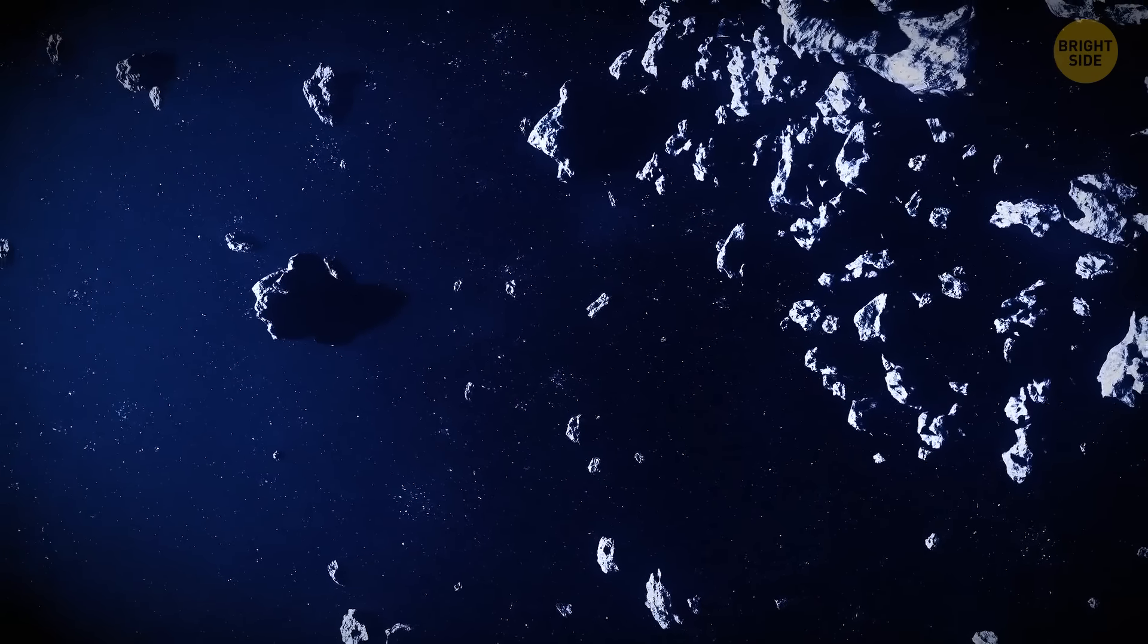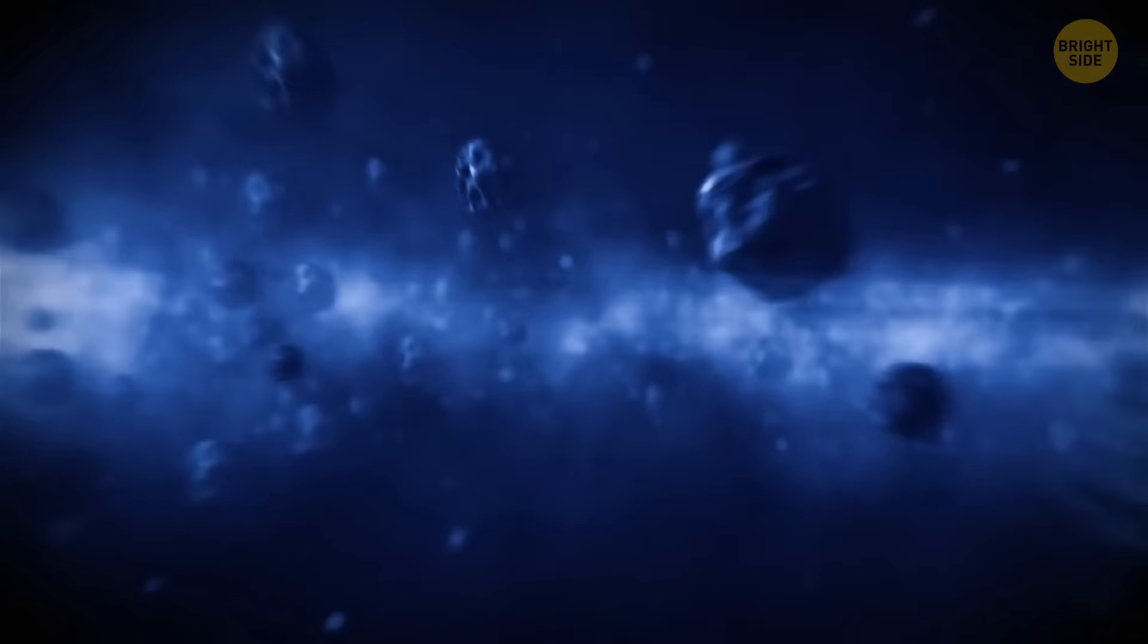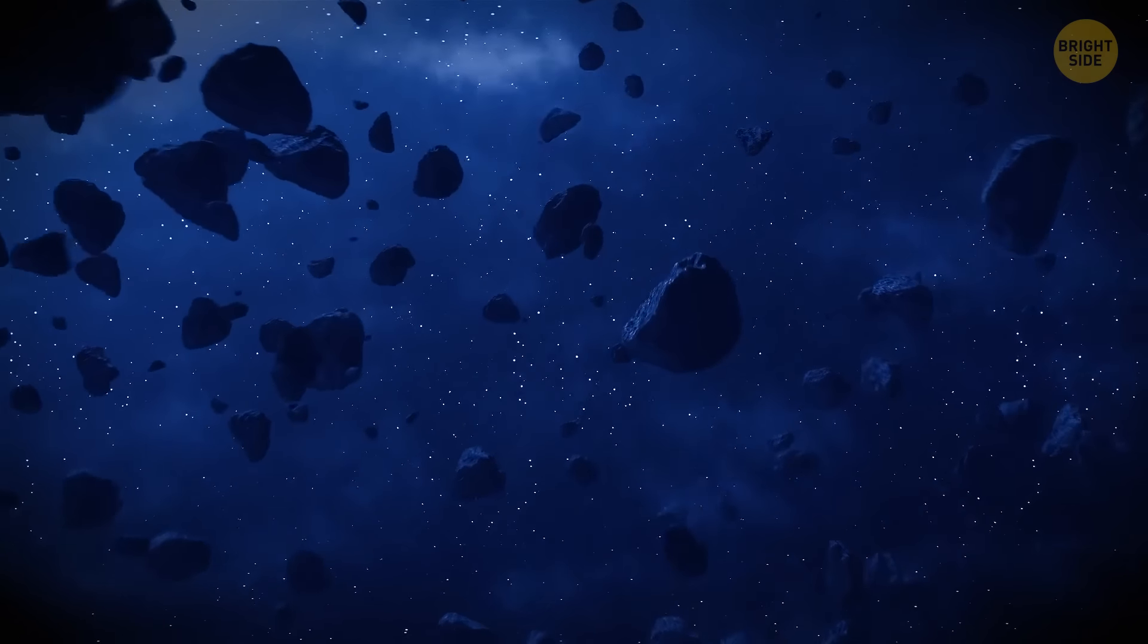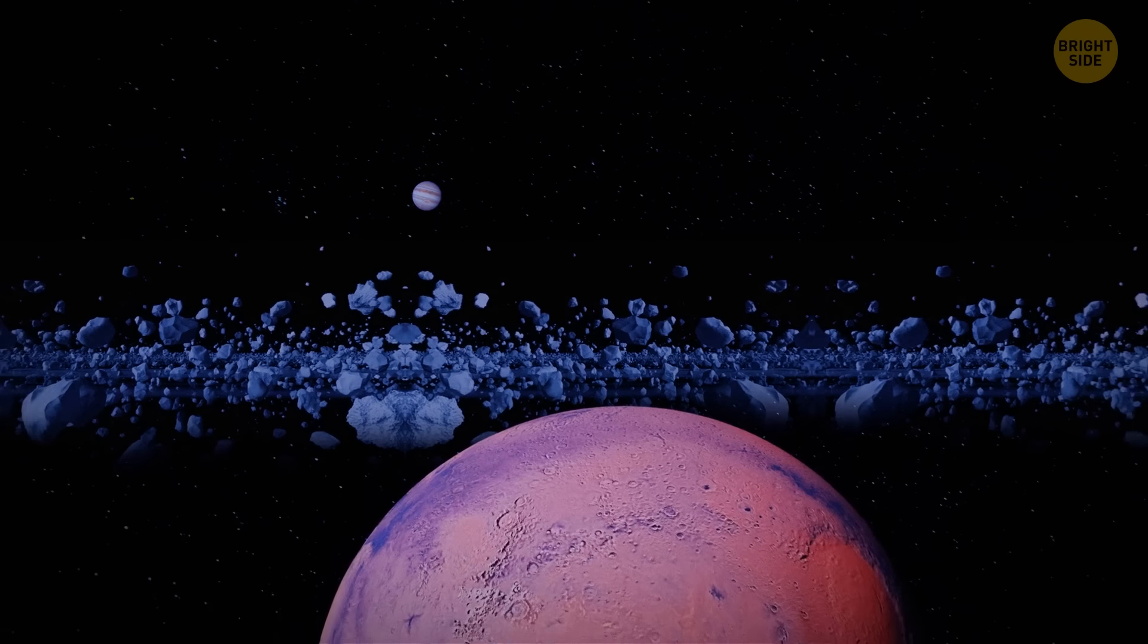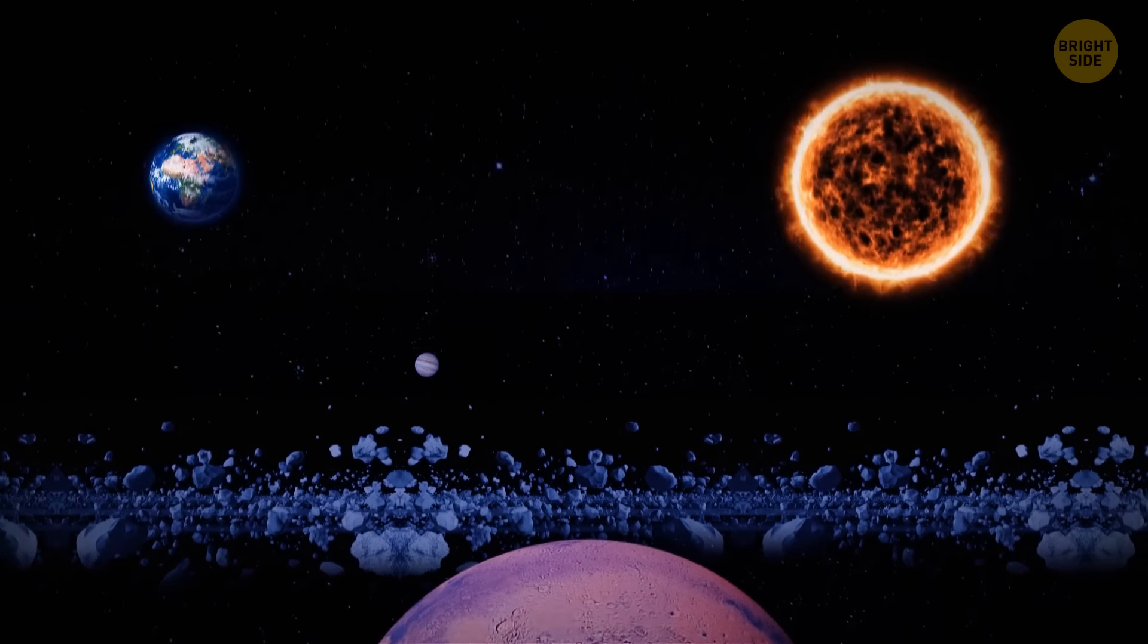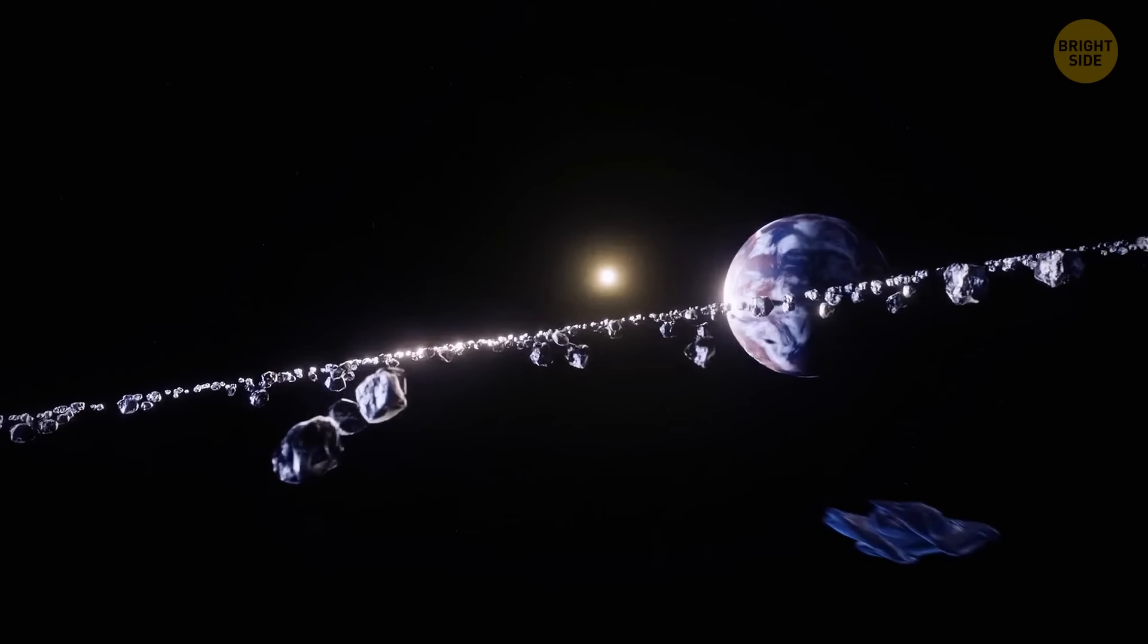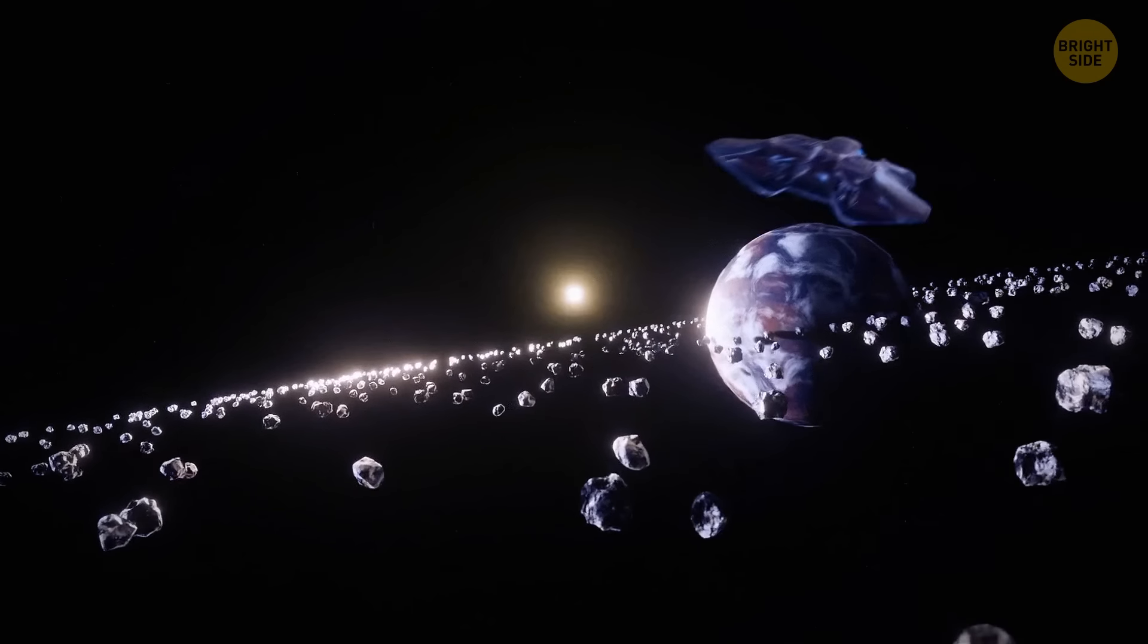And if you're worried about flying through an asteroid belt, don't be. Although it does have trillions of space rocks that range in size from space dust to a quarter of the size of the moon, they're very spread out. The asteroid belt between Mars and Jupiter is 140 million miles across, which is one and a half times the distance between Earth and the sun. This spreads space rocks thousands of miles apart, making it almost impossible for a spacecraft to collide with one.